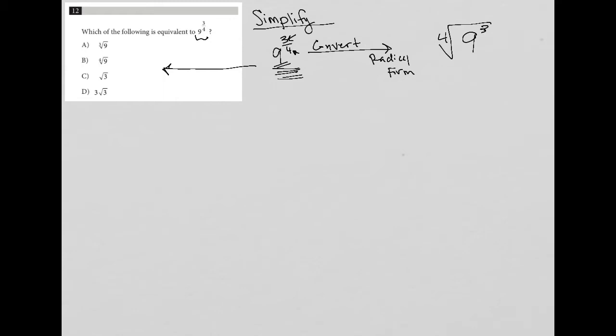I don't see that direct conversion as one of my answers. I'm going to cross out answer choice A because it has a cube root — I know we're dealing with fourth roots. Since I don't see my answer listed, it must mean I need to simplify further some way.